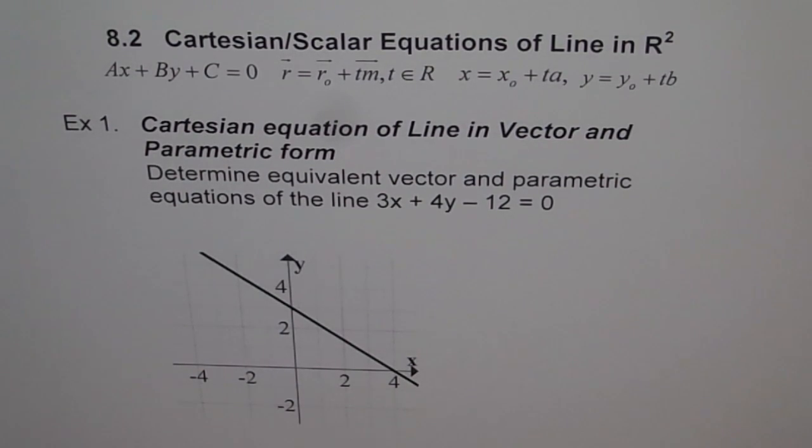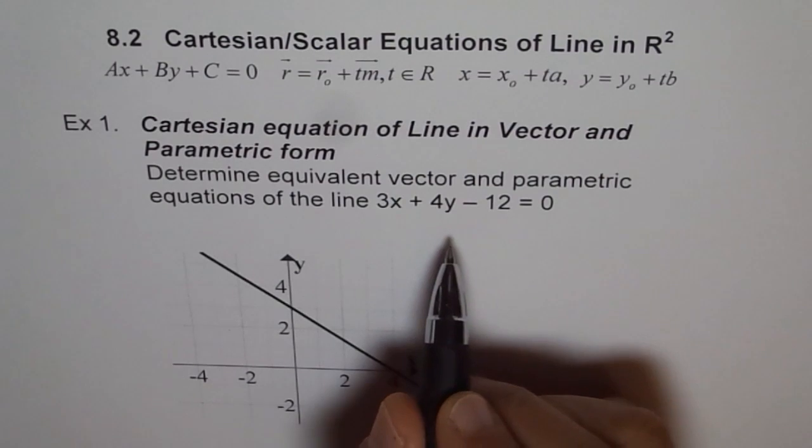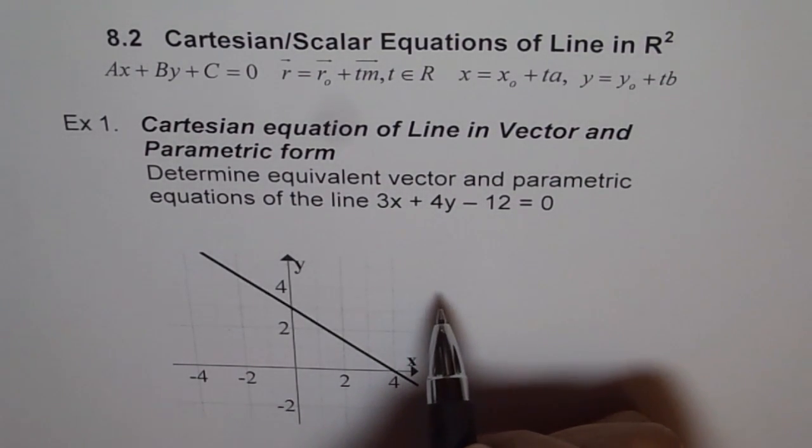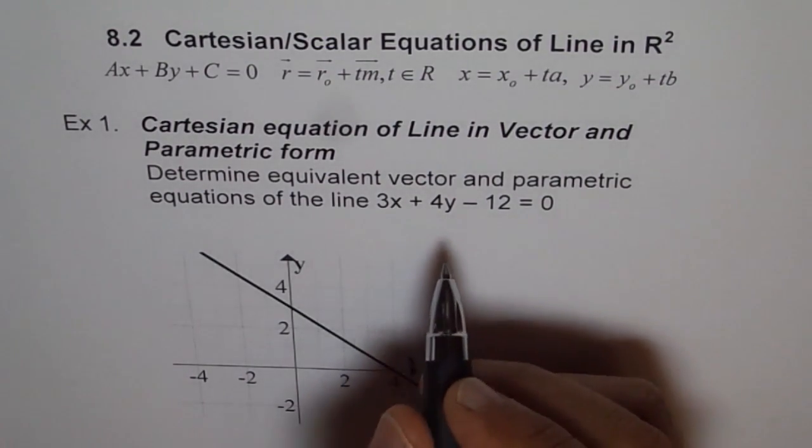Now, to write vector form from here, it will be good if we convert this to slope and intercept form. So once we get the slope, we can find our direction vector and a point and then get the equation in the vector form. So let us do that part first.